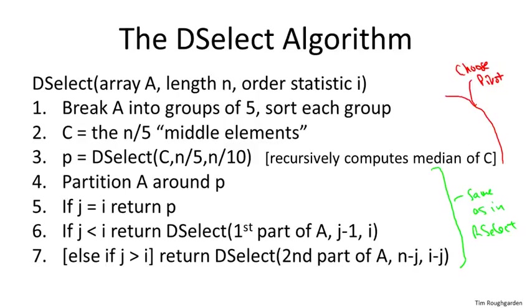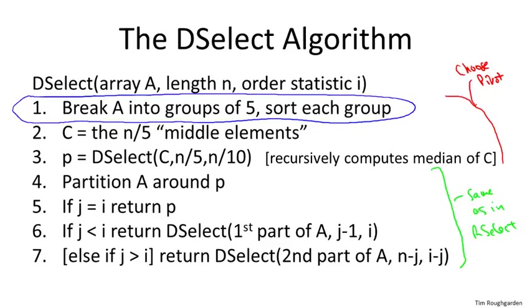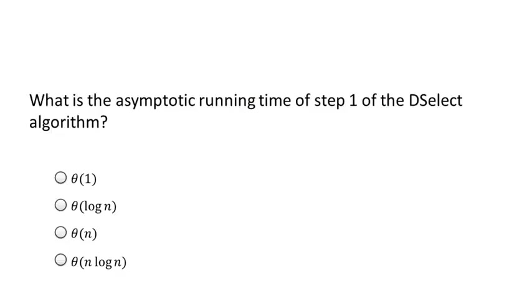The second reason for skepticism is that outside of the recursive calls, it seems like it does quite a lot of work as well. To drill down on that point and get a better understanding of how much work this algorithm does, the next quiz asks you to focus just on line one: when we sort groups of five in the input array, how long does that take? The correct answer is linear time — theta of n.